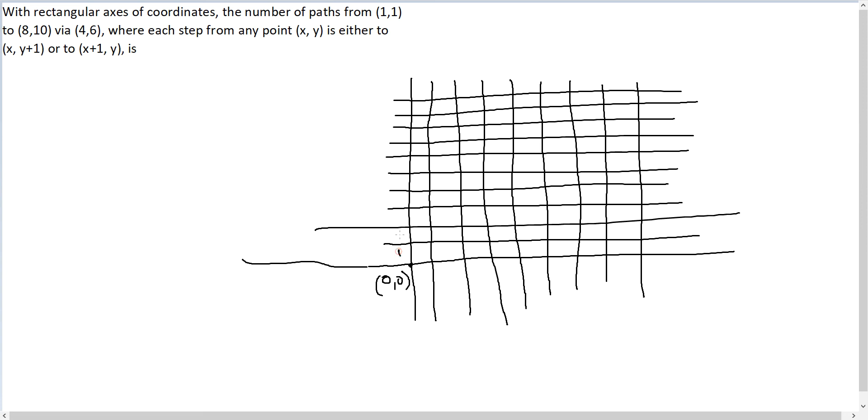This is the axis. This is 1, 2, 3, 4, 5, 6, 7, 8, 9, and 10 on the vertical axis. And the horizontal axis goes to 7, 8. You have to move in this matrix.